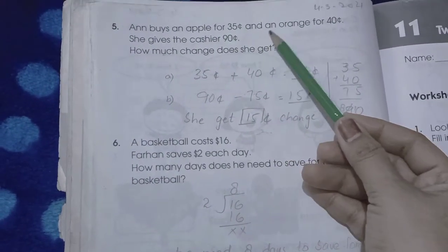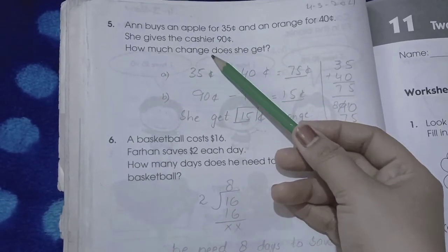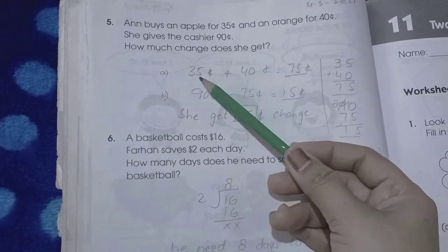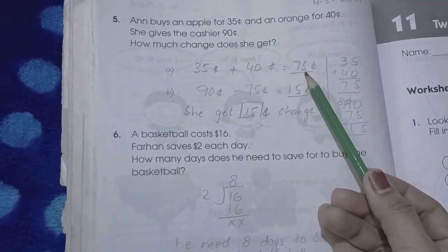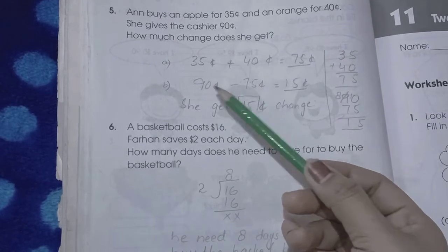Page number 44. Buy an apple for 35 cents and an orange for 40 cents. She gives the cashier 90 cents. How much change does she get? First we add 35 and 40, so the answer is 75. Now we subtract 75 from 90. She gets 15 rupees change.